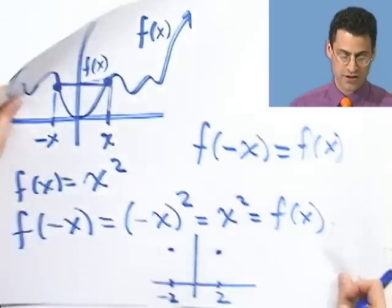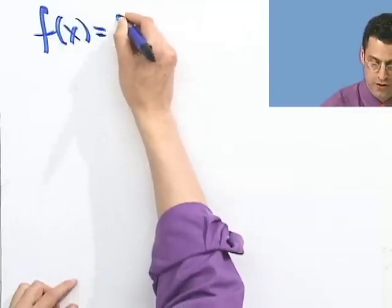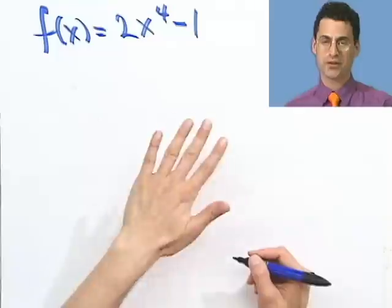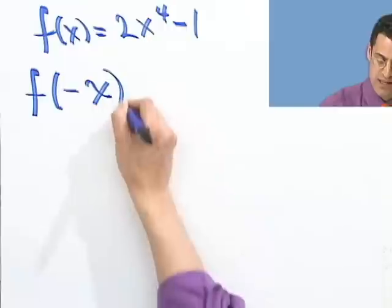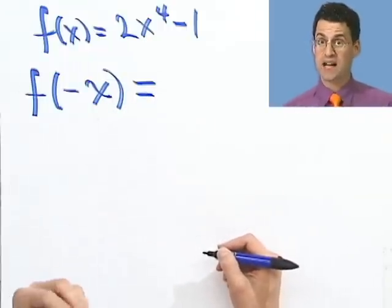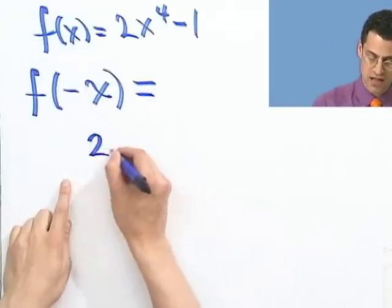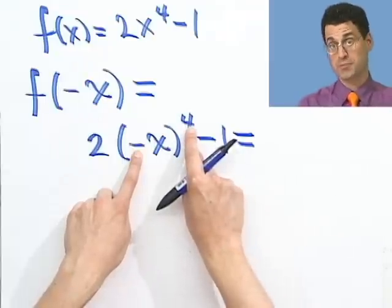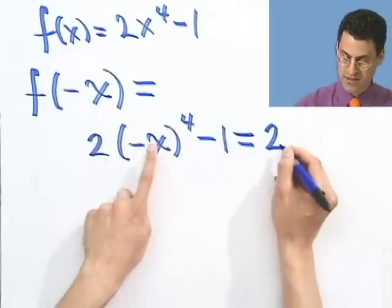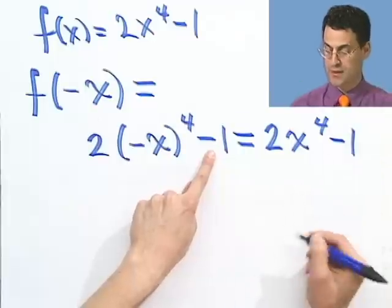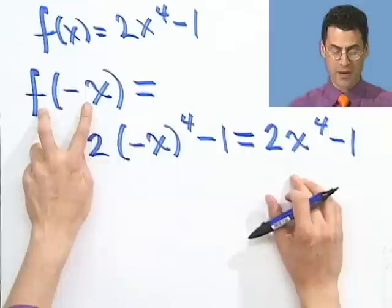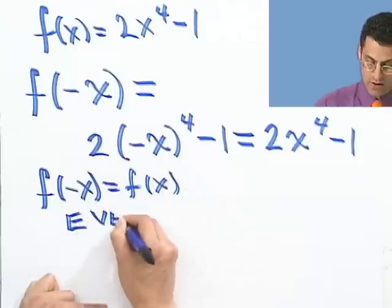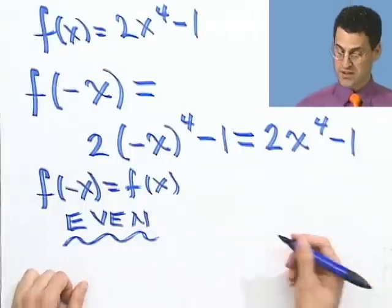Let's look at f(x) = 2x⁴ - 1. Is this an even function? All I have to do is compute f(-x): wherever I see x, I replace it with -x, giving 2(-x)⁴ - 1. Since (-1)⁴ = 1, the negative sign disappears — that's why we think of these as even functions. So I get 2x⁴ - 1, which is exactly the original function. Therefore f(-x) = f(x), so this function is even, or symmetric with respect to the y-axis.